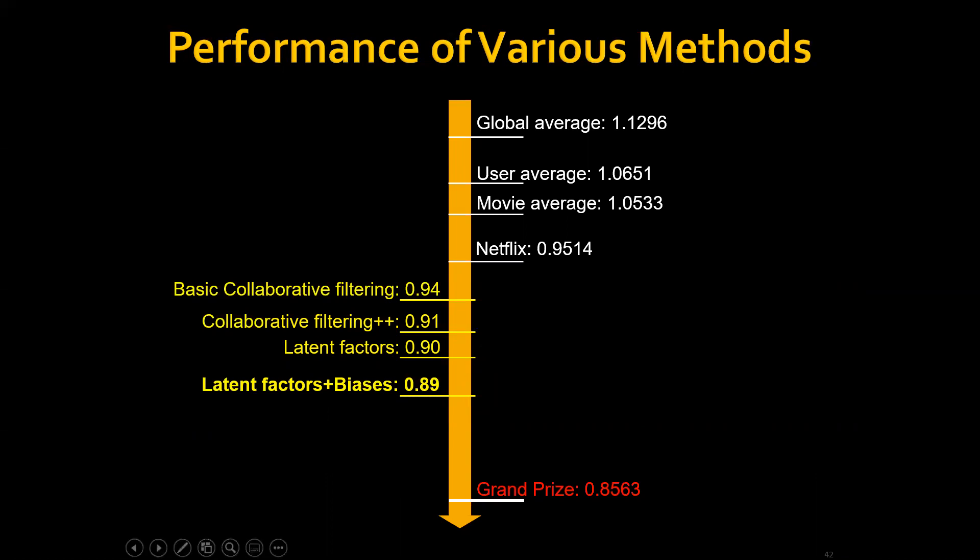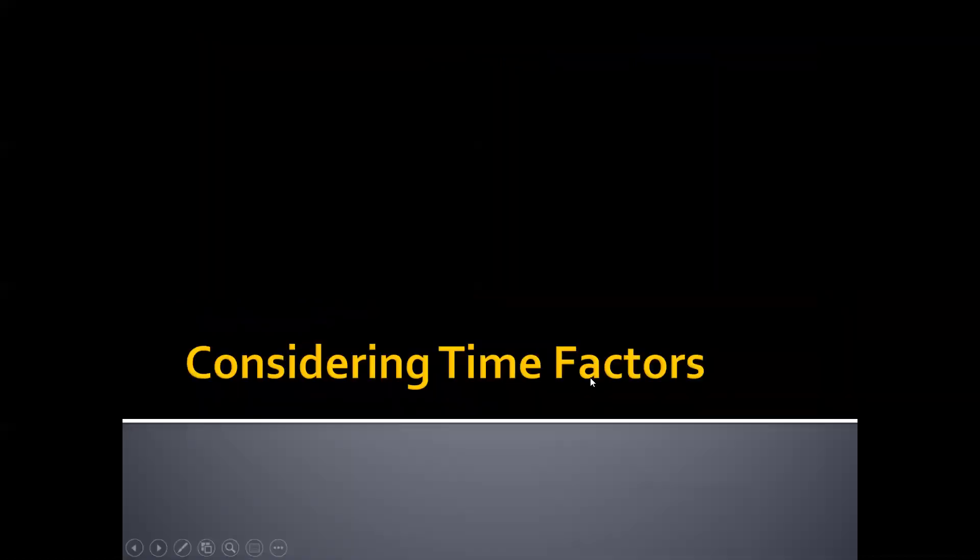If we extend it with the biases, we can get even better. We can have an RMSE of 0.89. What can we do now to further improve the performance? One thing we can do is to consider the time factors.